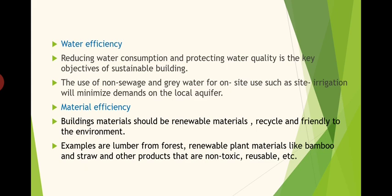Third is water efficiency — reducing water consumption and protecting water quality is a key objective of sustainable building. The use of non-sewage and greywater for on-site use such as site irrigation will minimize demands on the local aquifer.